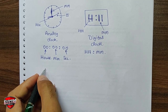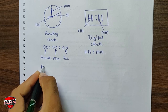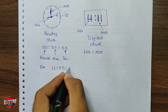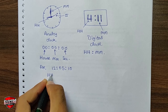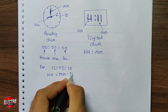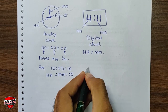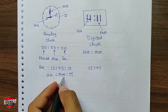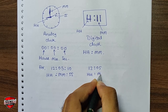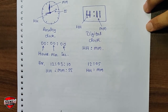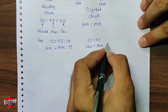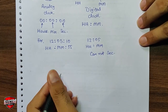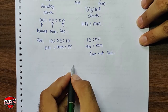For example, the analog clock indicates time like 12 hours, 05 minutes, and 10 seconds. But the digital clock can only indicate 12 hours and 05 minutes. The digital clock cannot indicate the seconds component — it simply cannot display that third component.